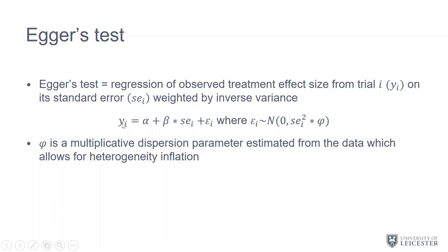The equation here—we can see our outcome, alpha is going to be our intercept, and then beta is our slope, and then we've got our error terms where our errors have this variance that includes this multiplicative dispersion parameter φ to allow for heterogeneity inflation.